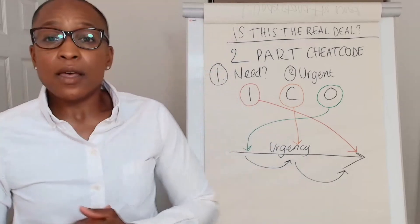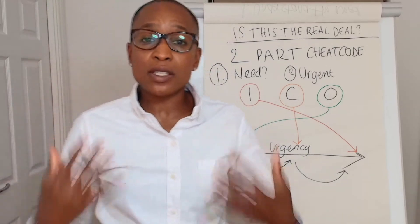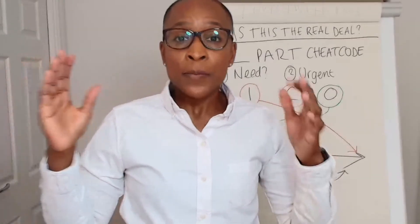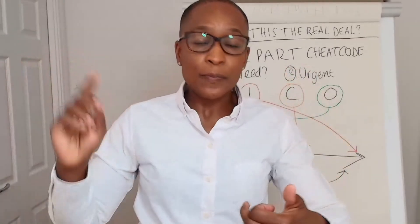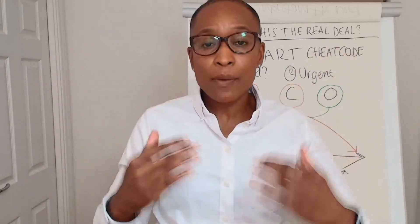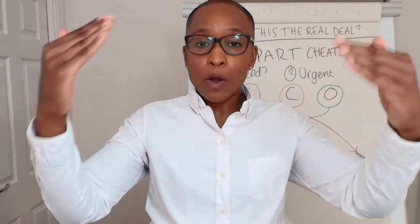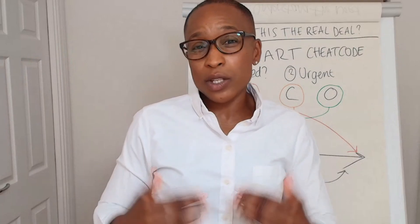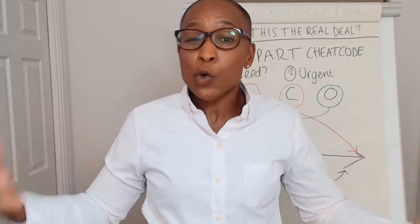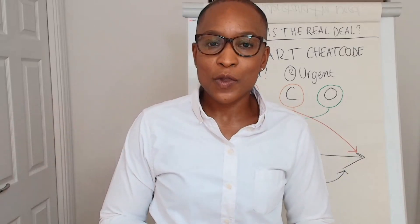That is the two-part cheat code to help you decipher: is this the real deal? Issues, challenges, and opportunities help you understand the type of need. And then the urgency scale helps you plot those needs to decipher whether it's likely to happen — if not at all, at least inside a realistic timeframe.